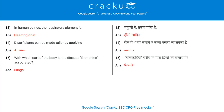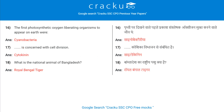Dashed tissue changes the diameter of a blood vessel — muscle. In human beings, the respiratory pigment is hemoglobin. Dwarf plants can be made taller by applying auxins. With which part of the body is the disease bronchitis associated? Lungs. The first photosynthetic oxygen-liberating organisms to appear on earth were Cyanobacteria. Dash is concerned with cell division — Cytokinin.